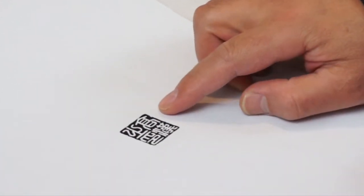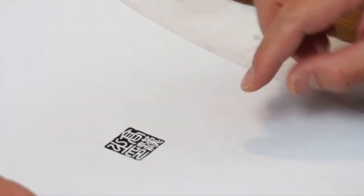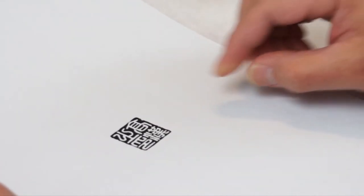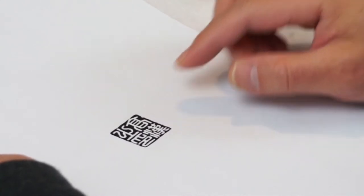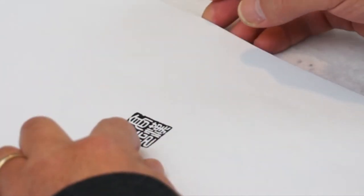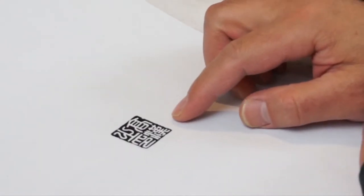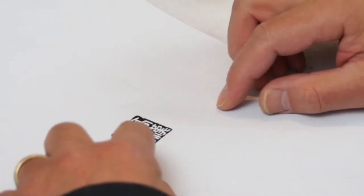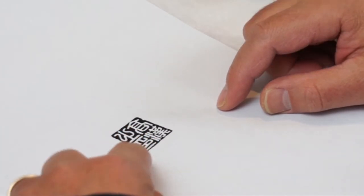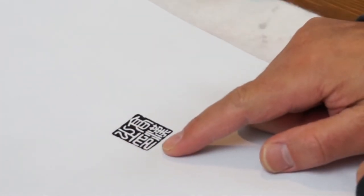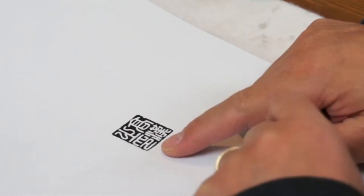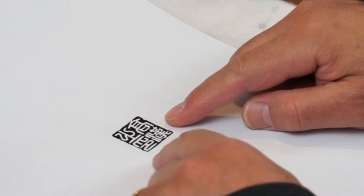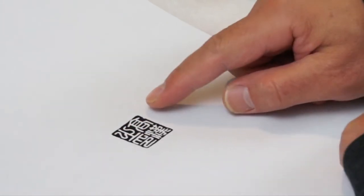In Chinese name seals, we always add the character yin, which means seal. If you have two character names, we use zhi yin, means seal of Gao Han.